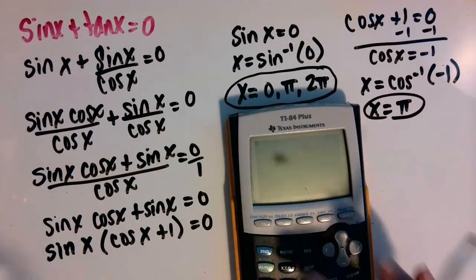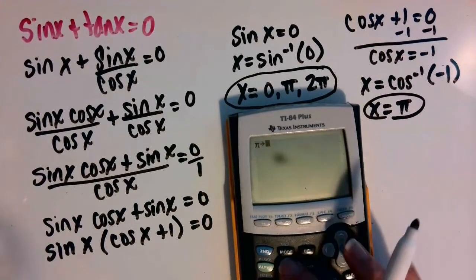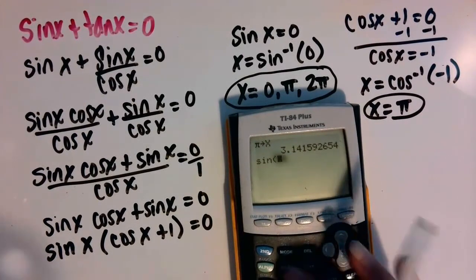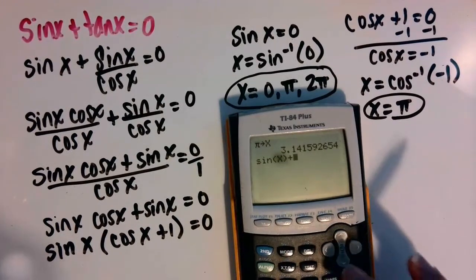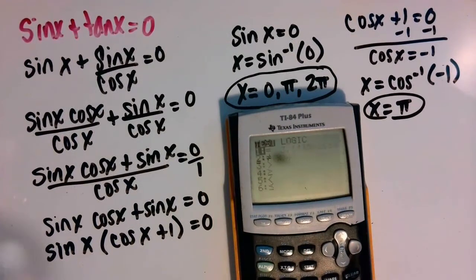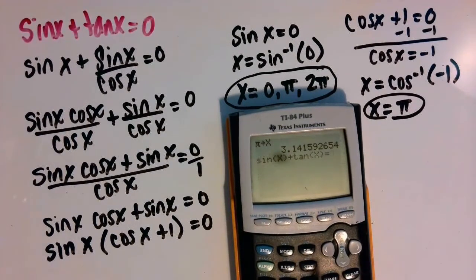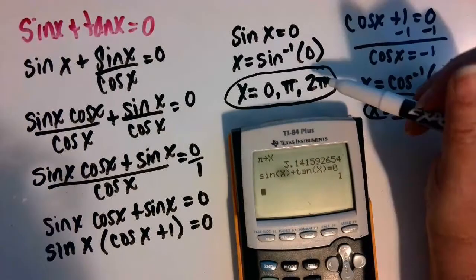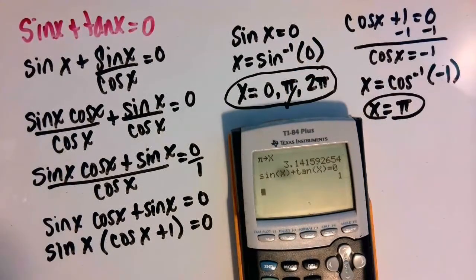Then we can put that answer of pi in, storing it as x, and sine of x plus tangent of x equals zero. Press enter, we get back a one, and so we know that pi checks as a solution.